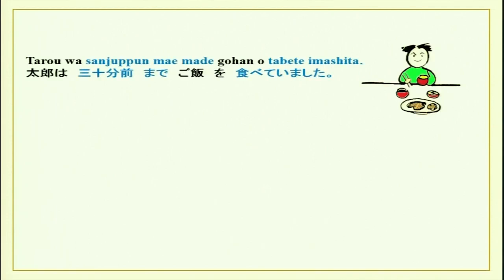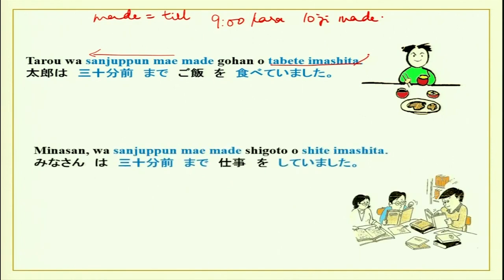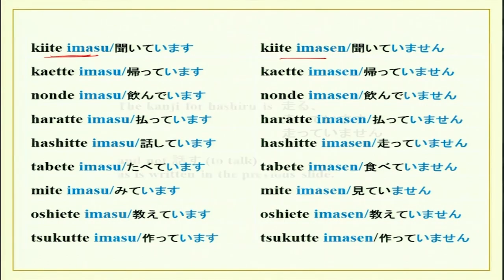Now let us see how it can be used in past tense as well. Taro-san wa sanjuppun mae made gohan wo tabete imashita — he was eating food up until 30 minutes ago, in past tense. Similarly, Nina-san wa sanjuppun mae made shigoto wo shite imashita — they were working until 30 minutes back, in past tense. I had given this to you last time — putting it here again so that you can compare the past form and past negative as well.